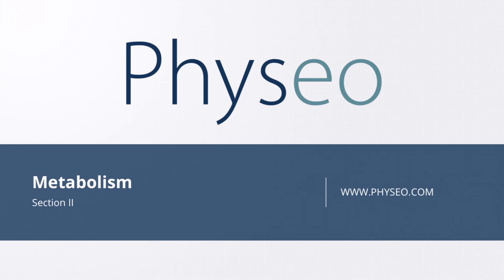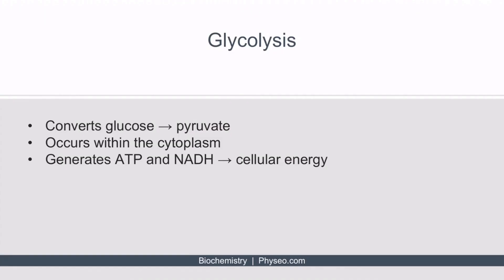Welcome to section 2 of Metabolism. In this section, we'll be discussing glycolysis. So what is glycolysis? It's a key metabolic pathway that occurs in all cells in which glucose is converted into pyruvate. It's important to know that this pathway occurs within the cytoplasm of cells, and the end result is the production of cellular energy.